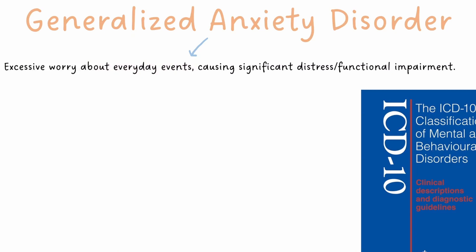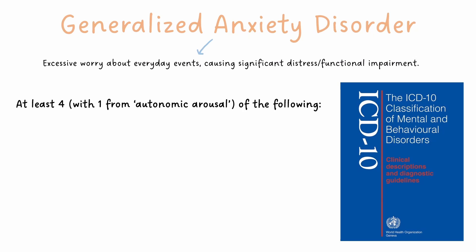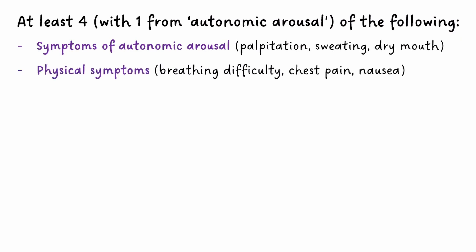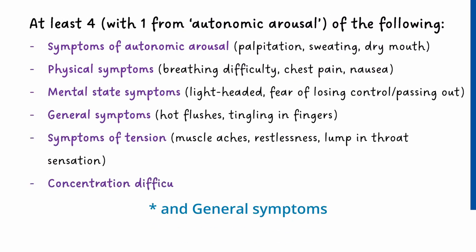For a diagnosis of Generalised Anxiety Disorder, the individual must also have significant distress or functional impairment as a result of the anxiety they experience. The diagnostic criteria set by the ICD-10 state at least four symptoms, with one from autonomic arousal, must be met. Symptoms of autonomic arousal are triggered by overactivity of the autonomic nervous system — the part of our nervous system that controls body systems not consciously directed — and can cause symptoms such as palpitations, sweating and a dry mouth. Physical symptoms include breathing difficulties, chest pain and nausea. Mental state symptoms, symptoms of tension, and concentration difficulties are the other categories.